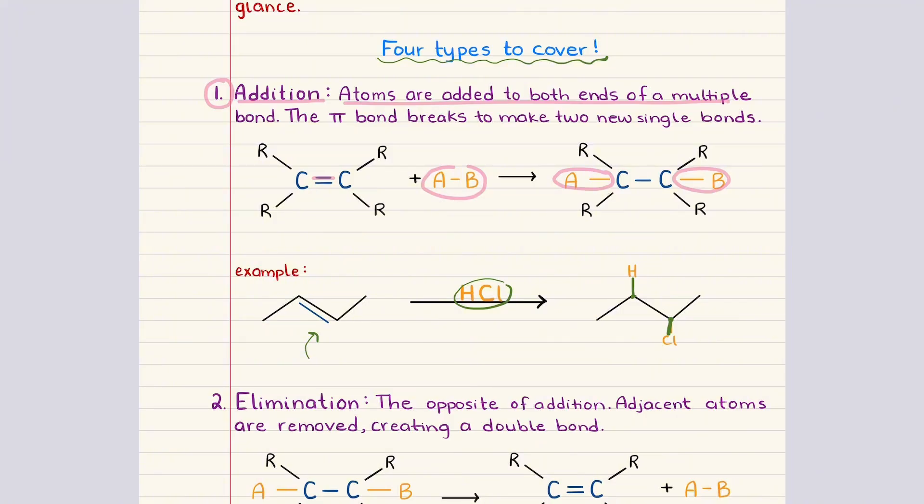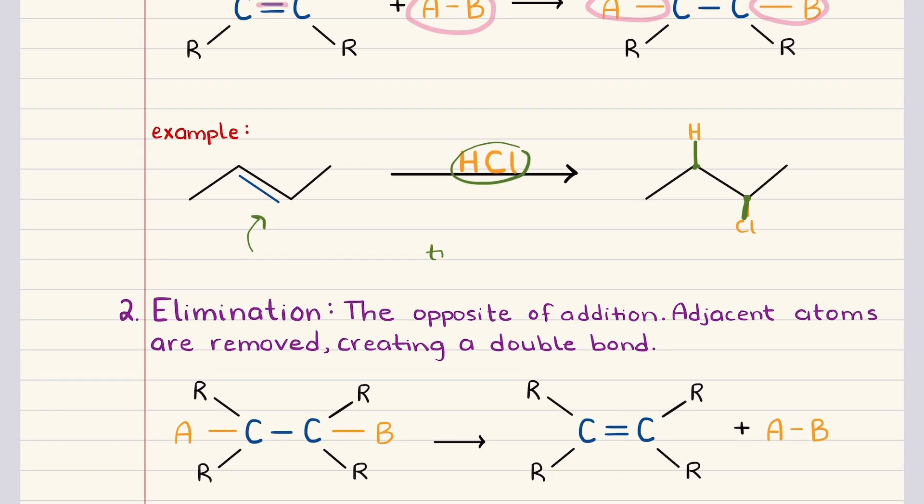It's also important to know that the same pattern applies to triple bonds as well. A carbon-carbon triple bond contains two pi bonds, and either one or both can be broken during addition. Breaking one pi bond converts an alkyne into an alkene, and breaking both converts it all the way to an alkene. And the underlying idea is the same—atoms are added across the pi bond, increasing the number of single bonds in the product.